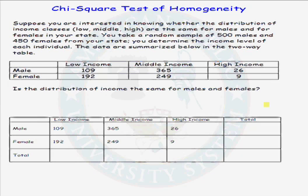Here's our problem. Suppose you are interested in knowing whether the distribution of income classes — low, middle, and high — are the same for males and for females in your state. Those are the two populations. You take a random sample of 500 males and 400 females from your home state, determine the income level of each individual, and summarize the data in a two-way table.